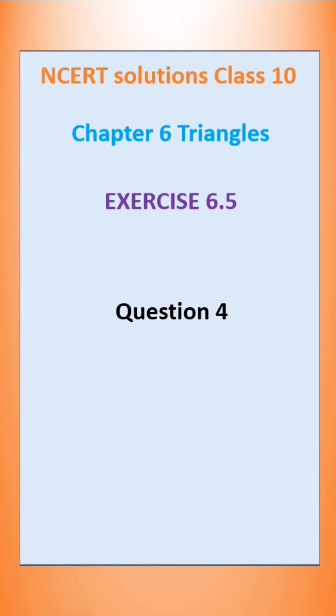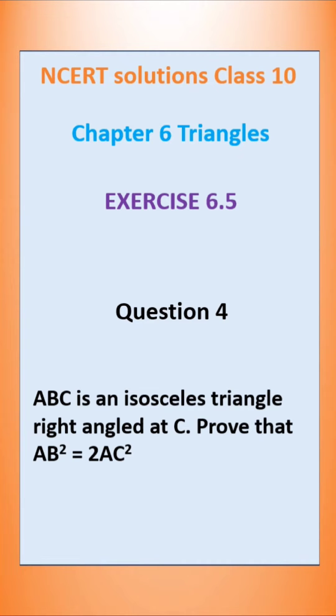In this video, let us solve question number 4 of exercise 6.5. The question is: ABC is an isosceles triangle right angled at C. Prove that AB² = 2AC².